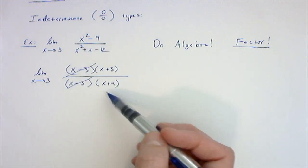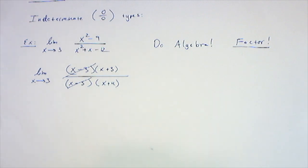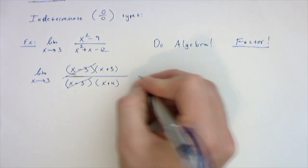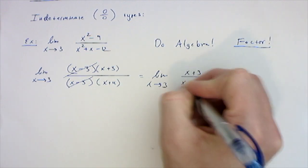When I ask what's the limit as x approaches 3 of this, it's actually the same as the limit as x goes to 3 of this remaining result, because canceling this out over here doesn't make a difference if you're looking at everything where x is not equal to 3. I'm trying to get the limit as x goes to 3 of x plus 3 over x plus 4.